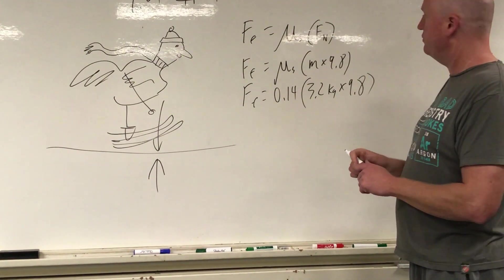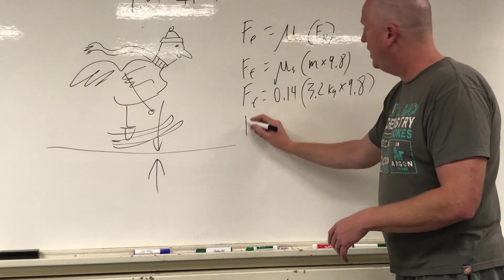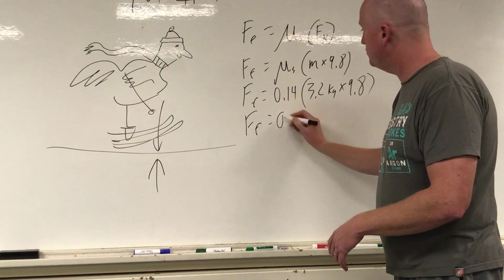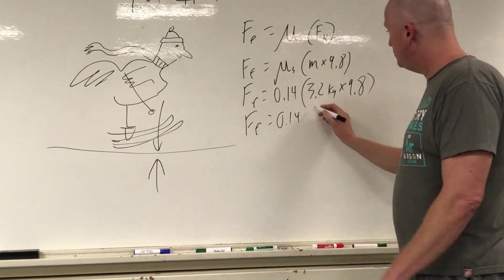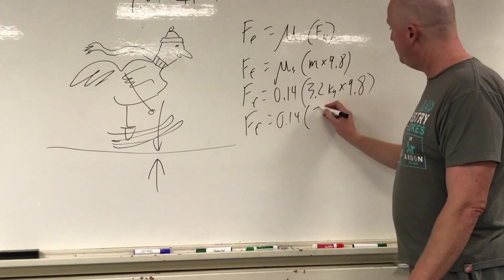So multiply them together. Force of friction is equal to 0.14... 3.2 times 9.8 happens to be 31.36, and that would be newtons.